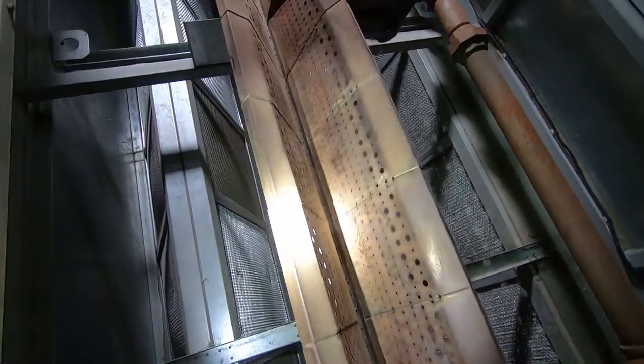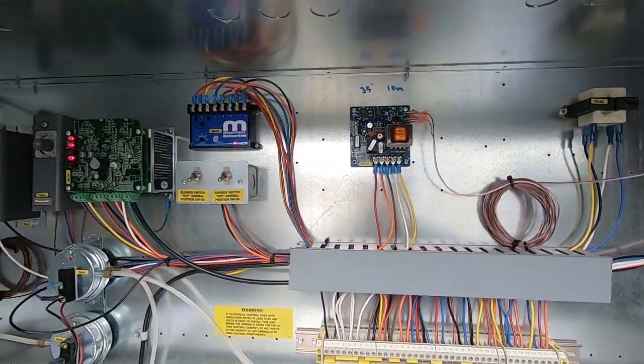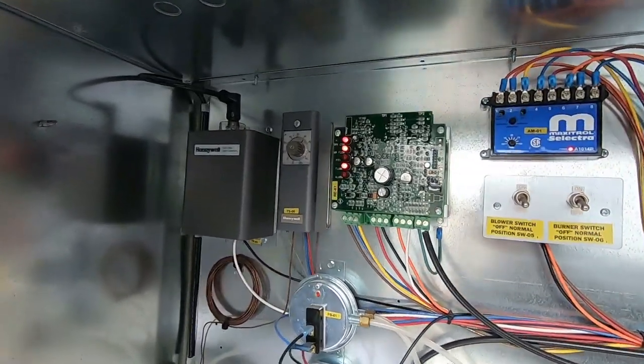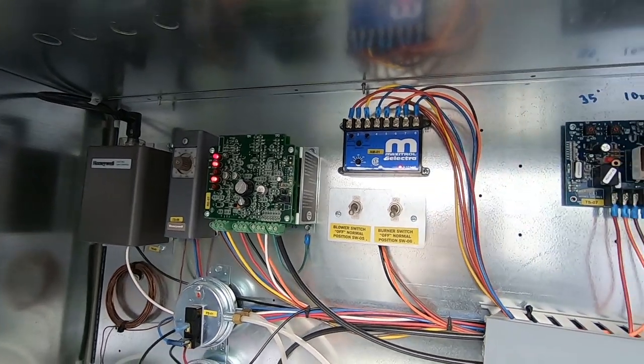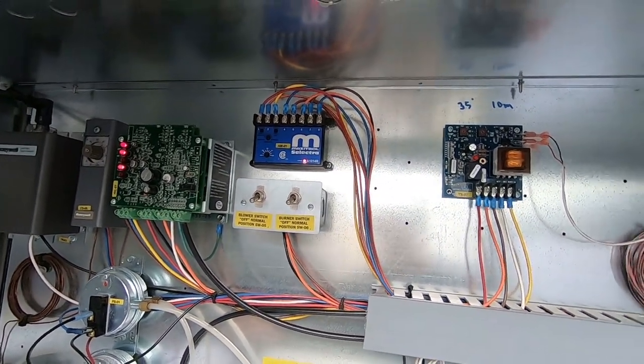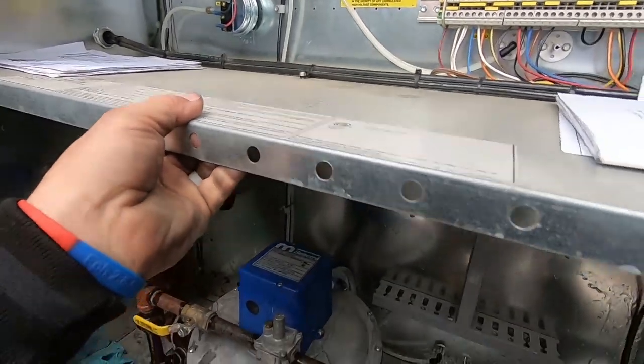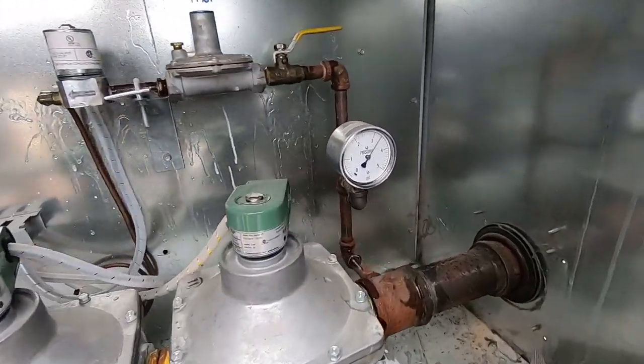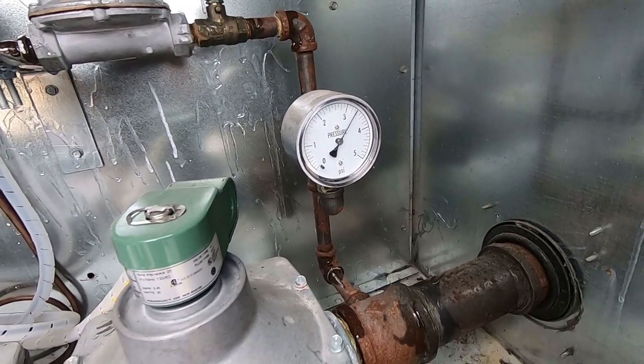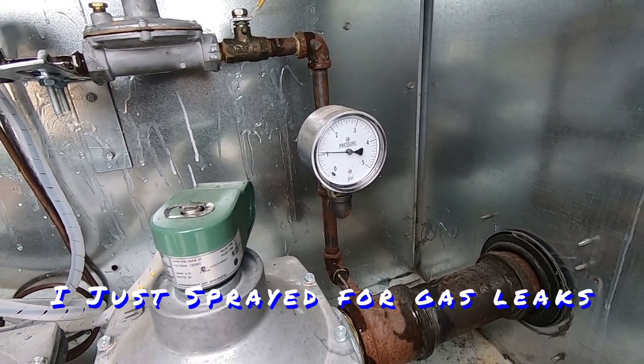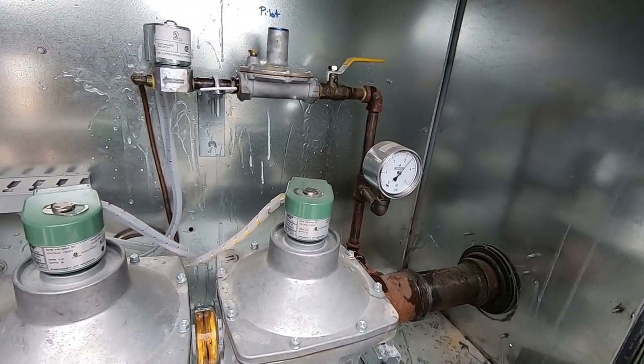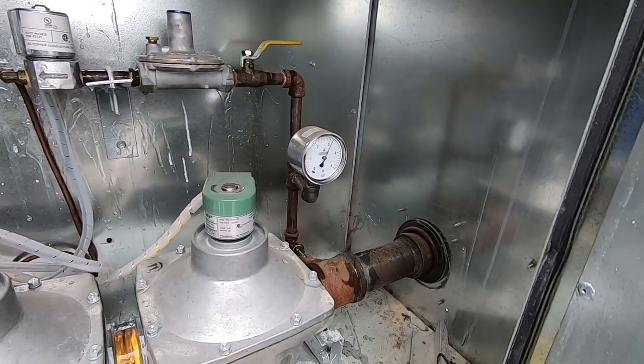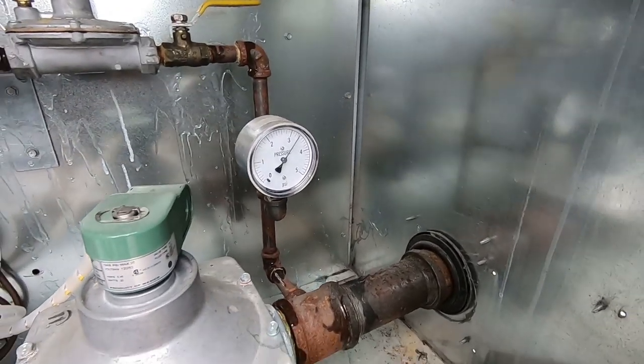Alright, we just turned it on. So far we've got flame, airflow operational, controls there, Maxitrol seem to be operating correctly. And three pounds of pressure, yeah that's a heck of a dip. That's not good, that would cause some issues. That's a major blip.